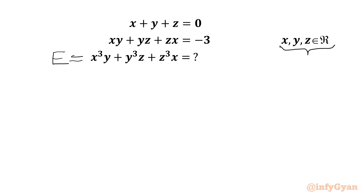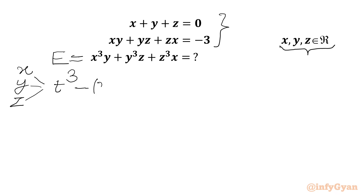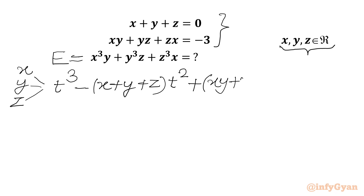Let's say this required expression is e. From the given equations, we can see three variables x, y, and z. So we can think about one cubic equation in t whose roots are x, y, and z. Then using Vieta's method we can write the cubic as t cubed minus (x+y+z) times t squared plus (xy+yz+zx) times t minus xyz equals zero.